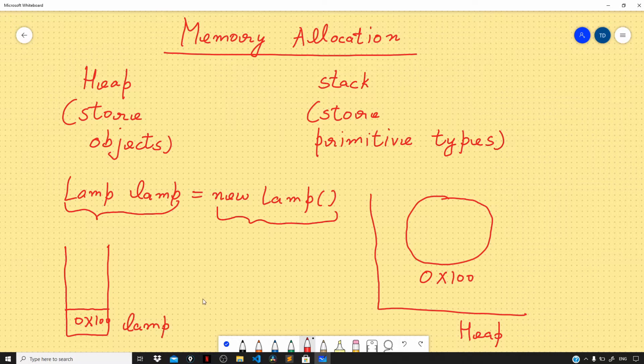It is referencing the lamp object that is sitting on the heap. That is also one of the reasons why we refer to these variables as reference types, because these variables do not store the actual values, contrary to primitive types.